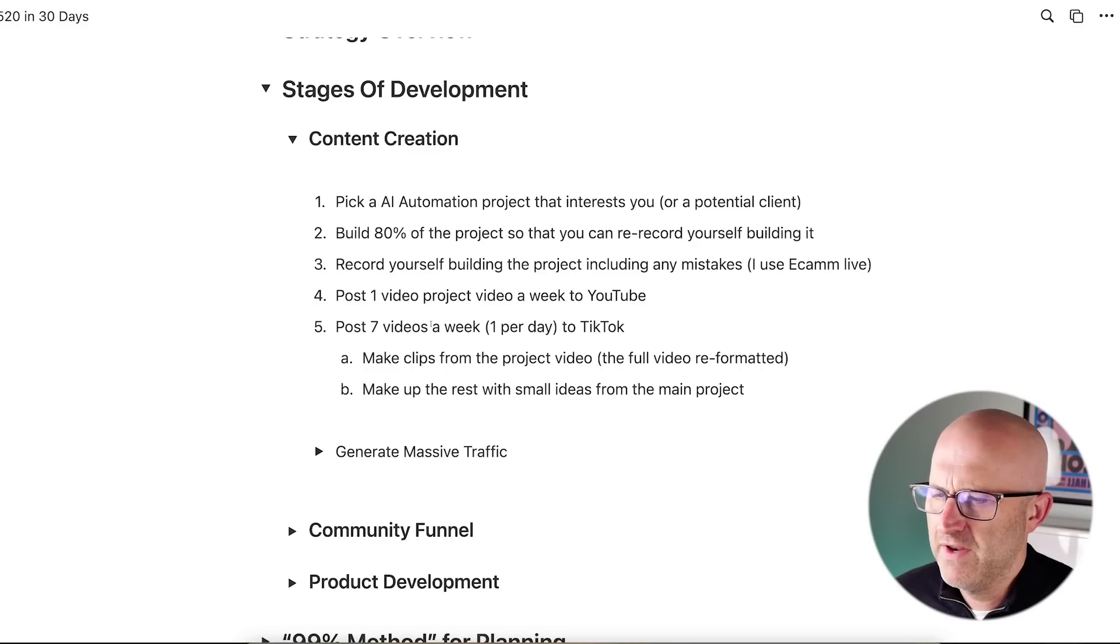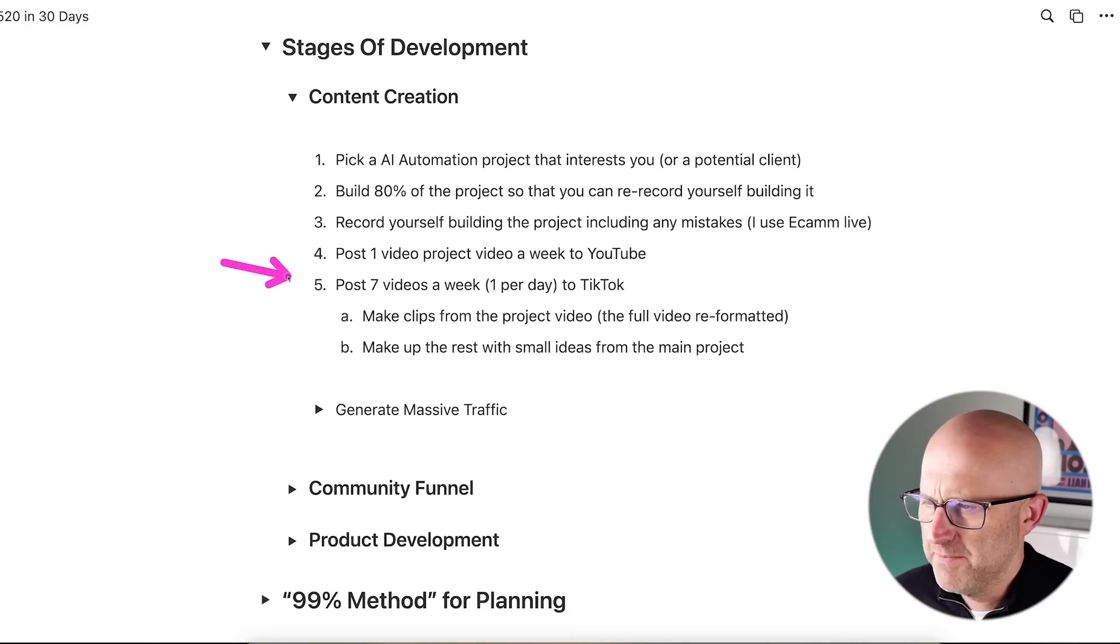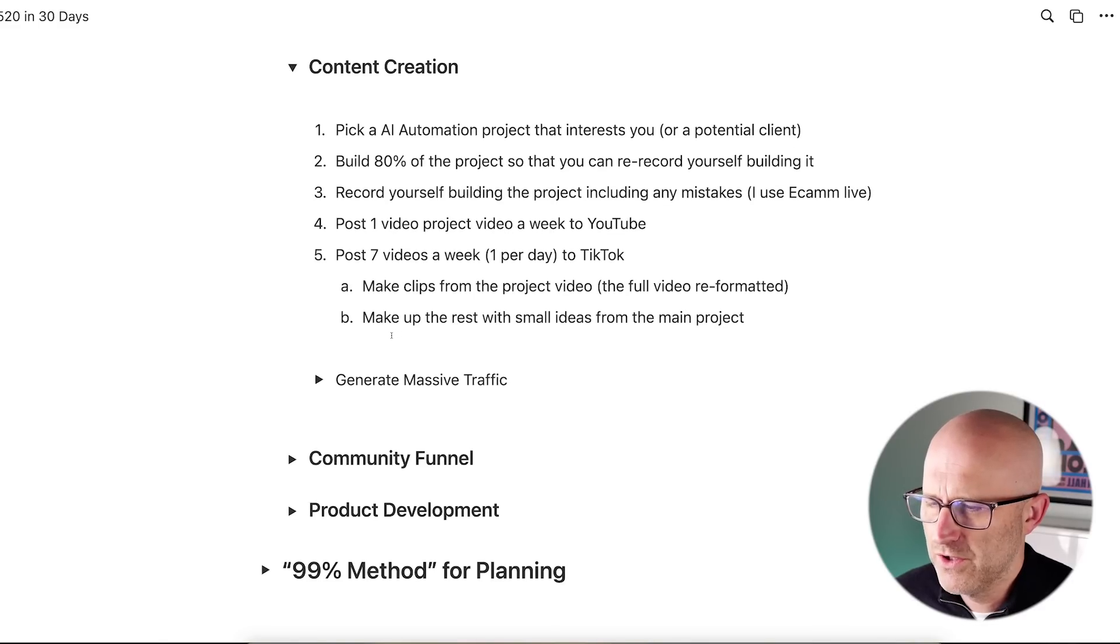I personally use Ecamm Live and I'll tell you why in a moment. And then you're also going to post seven videos a week, one per day to TikTok. But you really only need these two platforms to generate all the income you need. Now to make up these seven videos, you're going to make clips from the original YouTube video that you recorded. Believe it or not, on TikTok, you can publish up to 30 minute videos and they work really well. I'll show you in a moment. So you're going to make clips from that YouTube video. And if the YouTube video is longer than 30 minutes, then you can break that single video up into two TikToks. And then what you'll do is you'll make up the rest of these seven videos with small ideas from the main project that you recorded.